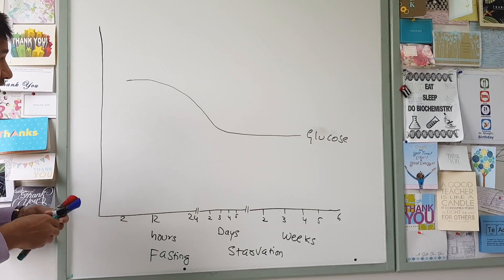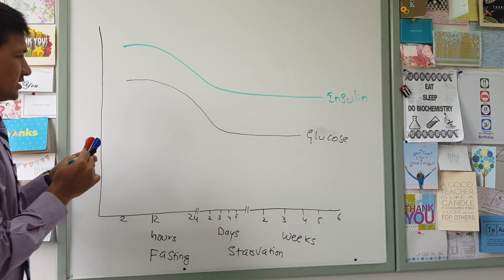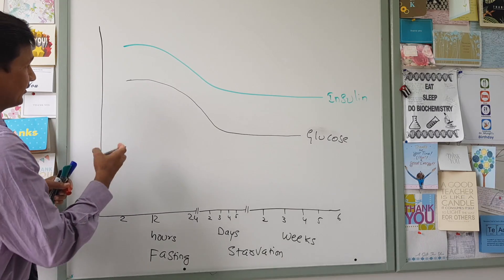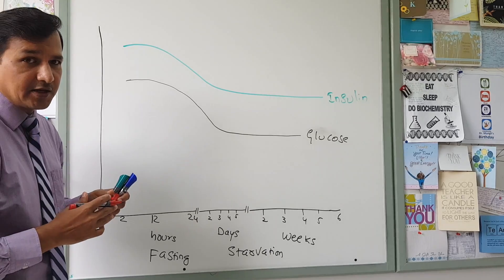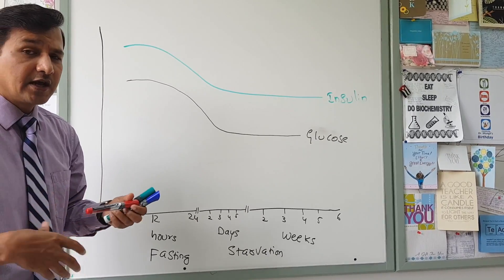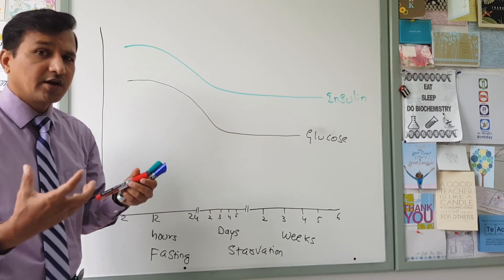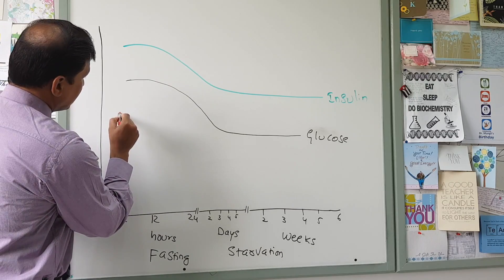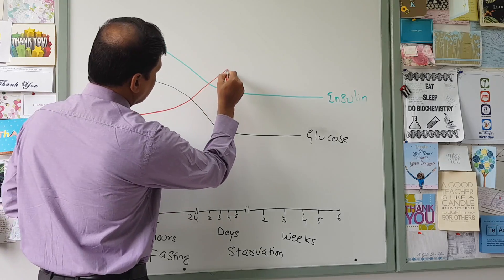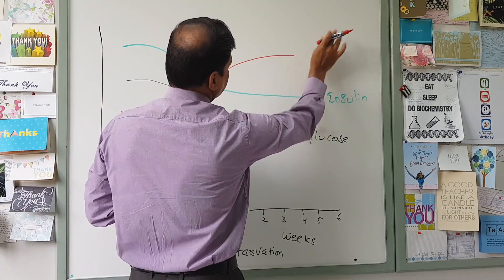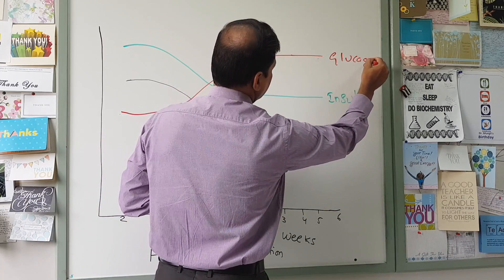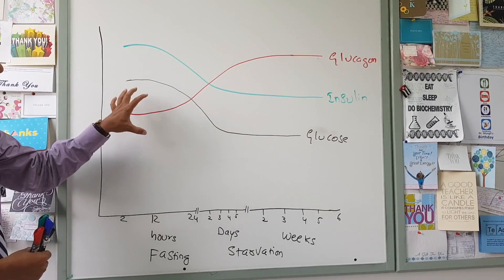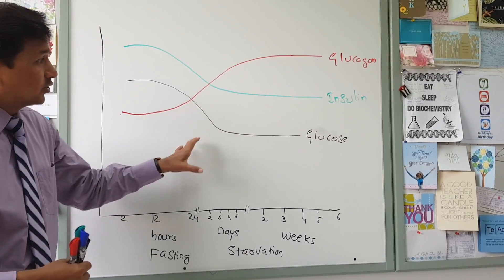As the blood glucose level falls, your insulin levels will also fall down. As the insulin level falls, glucagon levels will rise. Insulin comes from beta cells of the pancreas and glucagon from alpha cells of the pancreas. Generally, insulin has an inhibitory effect on alpha cells. So as the insulin level falls, the glucagon level will rise. What is the metabolic effect of glucagon? Glucagon is a catabolic hormone, as opposed to insulin, which is an anabolic hormone.